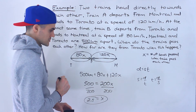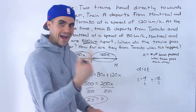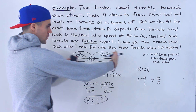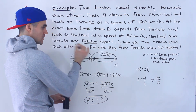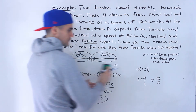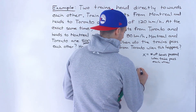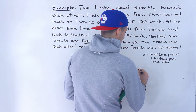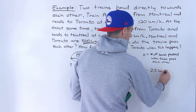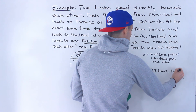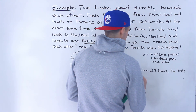So x equals 2.5 — two and a half hours. After two and a half hours, the trains are passing each other. That is the answer to the first part of the question.